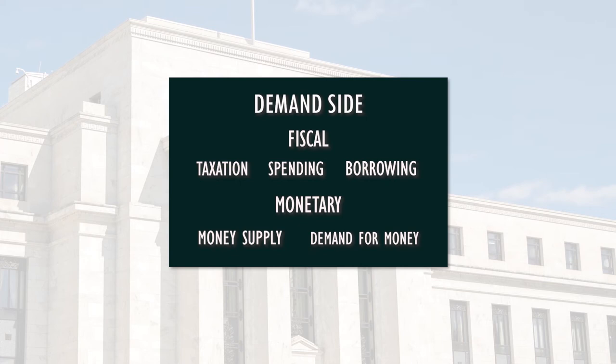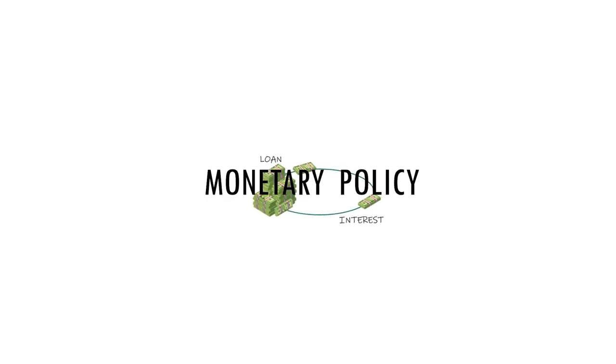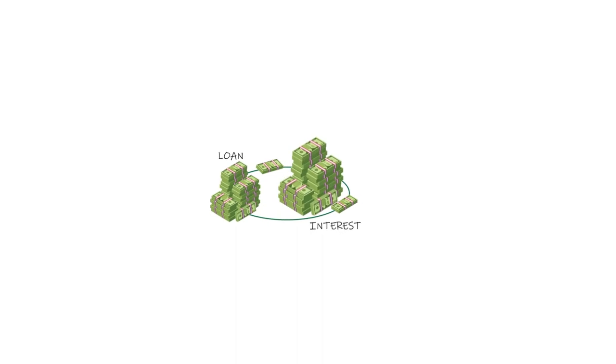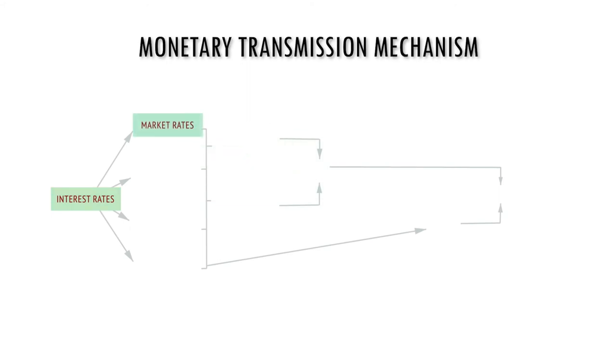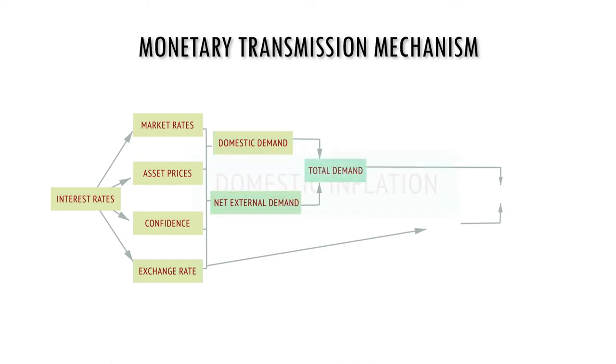Fiscal and monetary policy can be used to target any policy objective, although typically, monetary policy is given over to the pursuit of a stable price level. Monetary policy involves changing either the price of money, its interest rate, or the quantity of money. The monetary transmission mechanism shows how interest rates work their way through the economy, affecting asset prices, confidence, exchange rates, and finally, onto the price level.